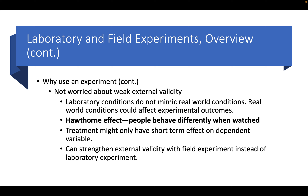Something called the Hawthorne effect affects all of us — it's a systematic error. People behave differently when watched. This was discovered in Hawthorne, Massachusetts, on the assembly line, when observers noted that workers were working particularly hard and paying great attention to their tasks. But when the observation ended, workers weren't quite so careful. Thus, the treatment might only have a short-term effect on the dependent variable, in part because of the Hawthorne effect. We can strengthen external validity by using field experiments instead of just relying on the lab.